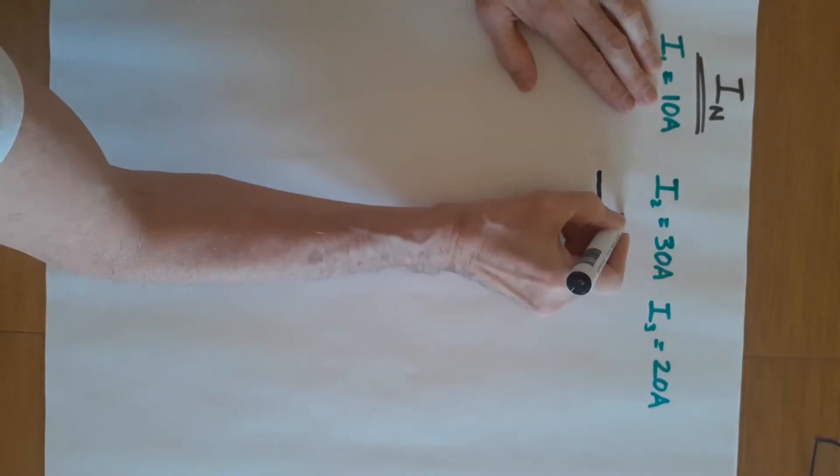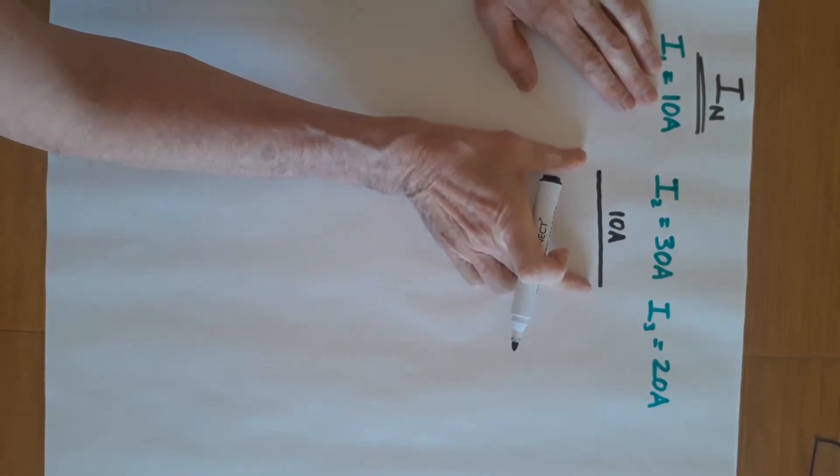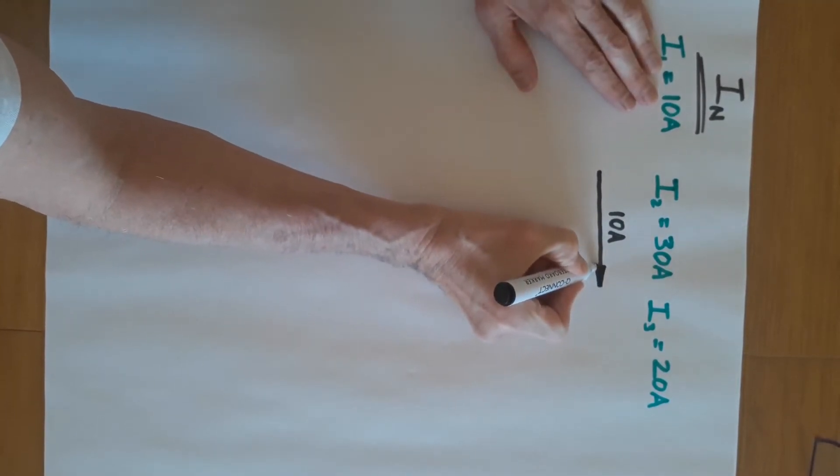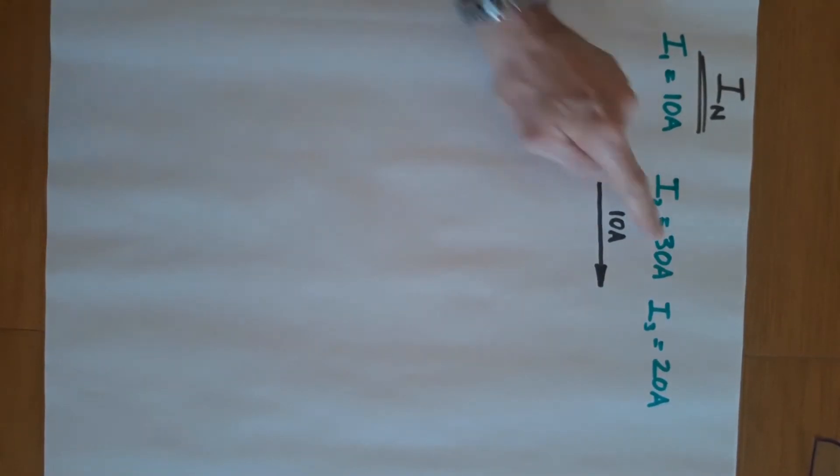So I'm going to say that this is 10 amps. This straight line that represents a current and it's to scale is called a phaser. So this is a type of phaser diagram.